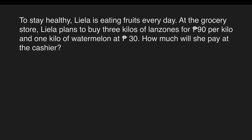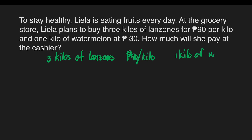Example: to stay healthy, Laila is eating fruits every day. At the grocery store, Laila plans to buy 3 kilos of Lanzones for 90 pesos per kilo and 1 kilo of watermelon at 30 pesos. How much will she pay at the cashier? Our given are the following: 3 kilos of Lanzones at 90 pesos per kilo, and 1 kilo of watermelon sold at 30 pesos per kilo.